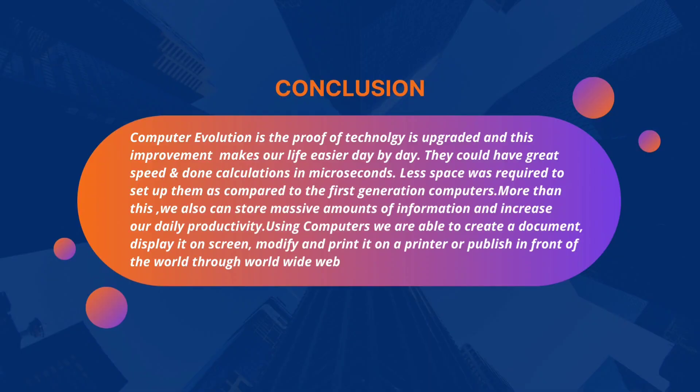In conclusion, computer evolution is proof that technology is continually upgraded, and this improvement makes our lives easier day by day. Computers can achieve great speed and perform calculations in microseconds. Less space is required to set them up compared to first generation computers. Modern components such as microprocessors, transistors, integrated circuits, and vacuum tubes each represent a generation of progress. We can also store massive amounts of information and increase our daily productivity.